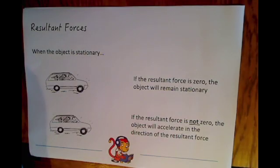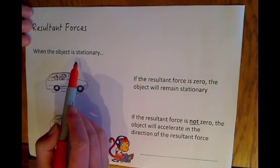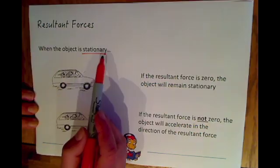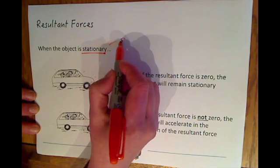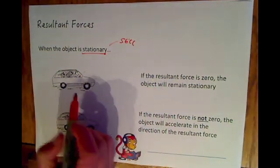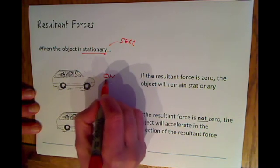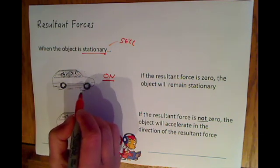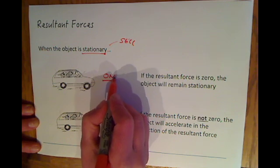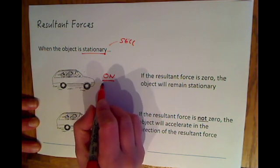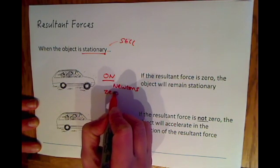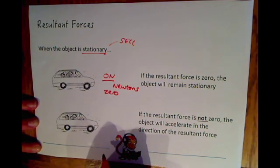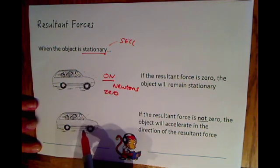There are a couple of key rules about resultant forces. First, you have to work out whether the object is stationary or moving. For a stationary object, the rule says that if the resultant force is zero, the object will remain stationary — still. For example, if this car had a resultant force of zero newtons, that car would remain stationary. The units for newtons are always a capital N.